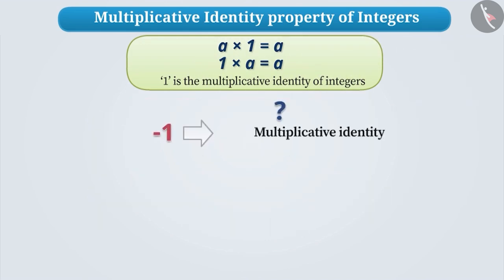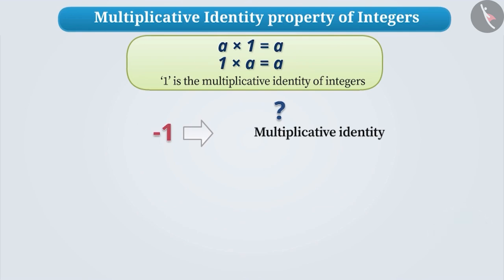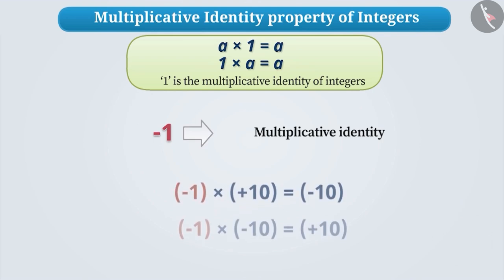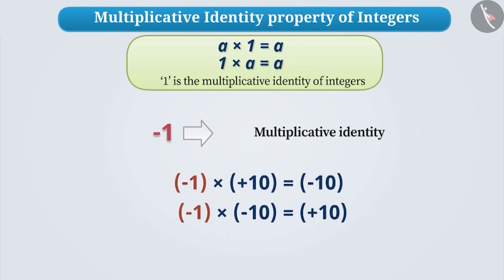Is minus 1 also a multiplicative identity? When multiplied with minus 1, the value of the integer changes. Therefore, minus 1 is not a multiplicative identity.